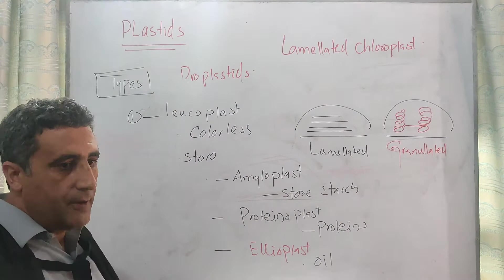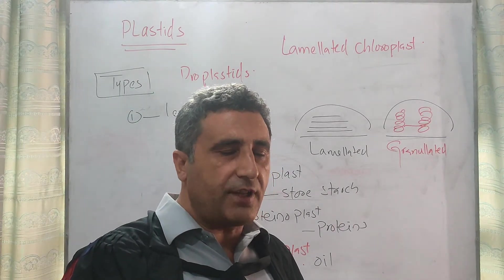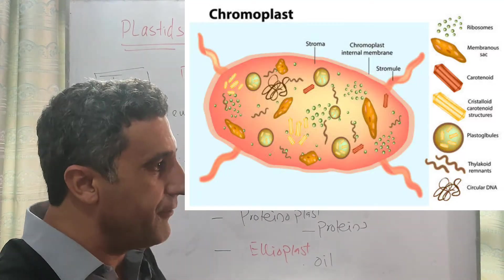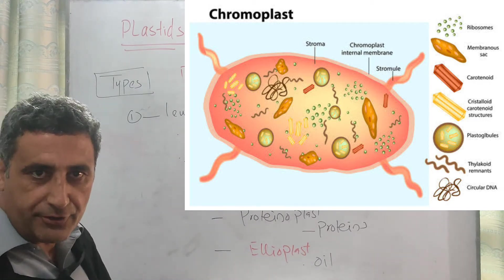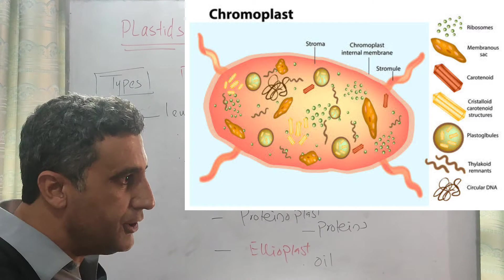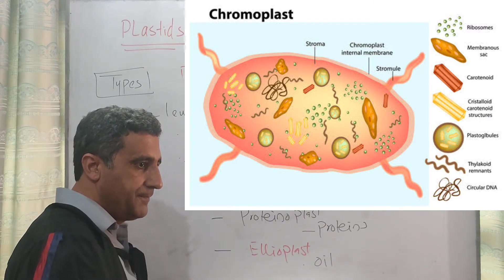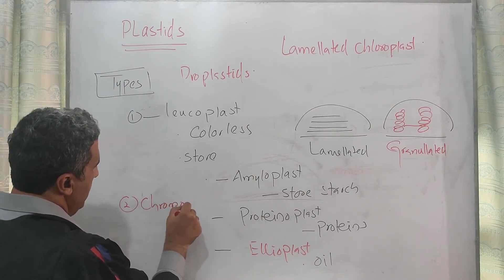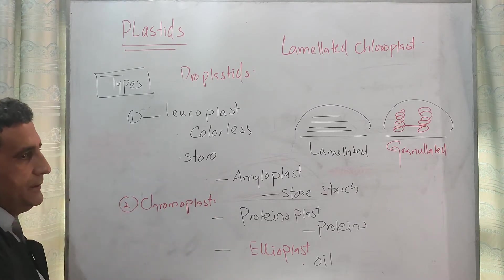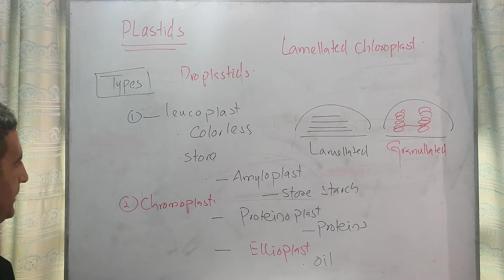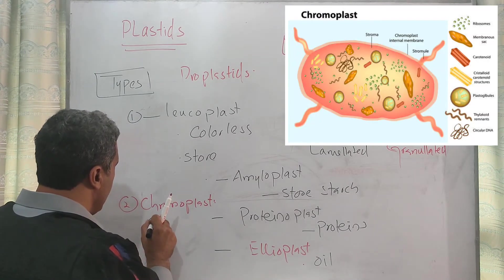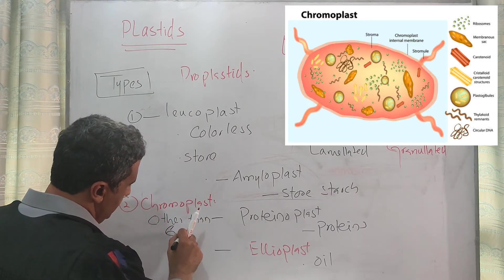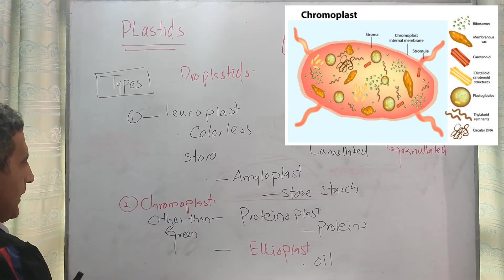If they contain a color other than green, if they possess a colorant that is other than green, that is known as chromoplast, which gives color to the petals, to the fruits, and to the autumn leaves. The second type is chromoplasts. Chromoplasts are the plastids which are other than green in color.